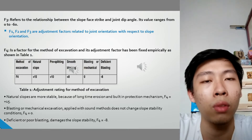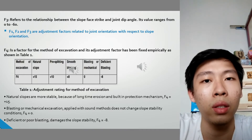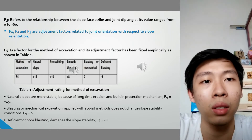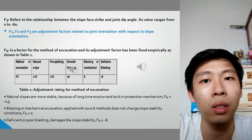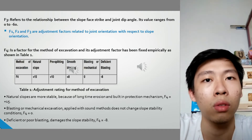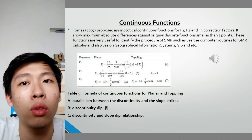Factor 4 is the factor for the method of excavation, and its adjustment factors have been fixed empirically as shown in Table 1. Natural slopes are more stable because of long-term erosion and built-in protection mechanics, so the value for Factor 4 is positive 15. Blasting or mechanical excavation applied with sound methods does not change slope stability condition, so the value is equal to zero. For deficient or poor blasting, the slope stability value is equal to negative values.